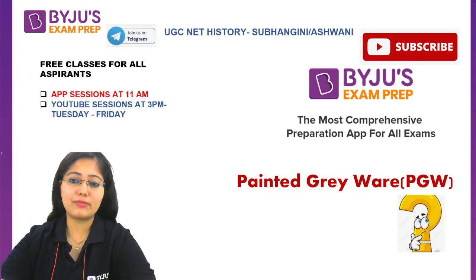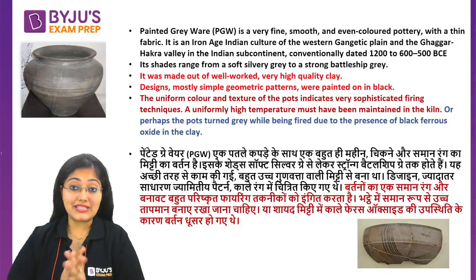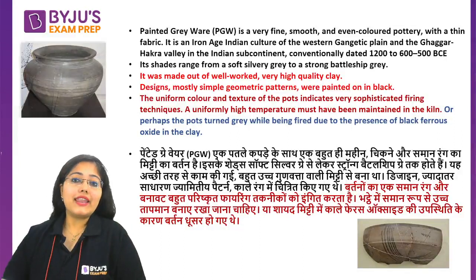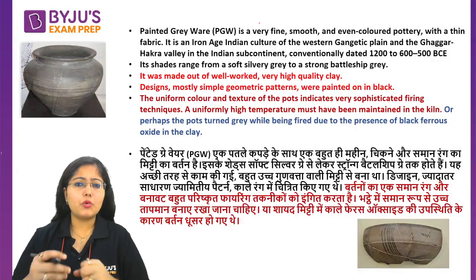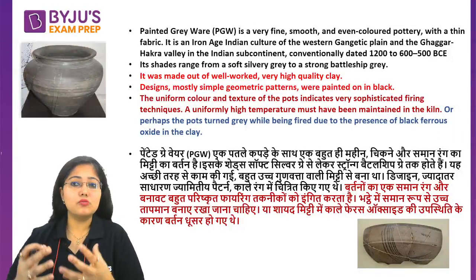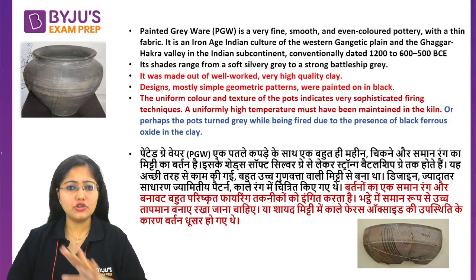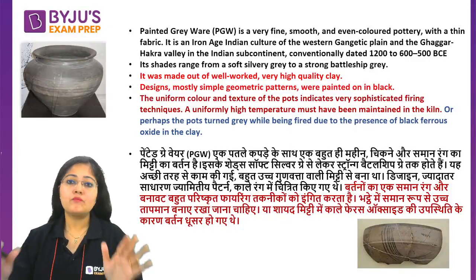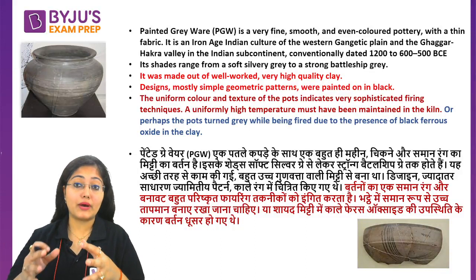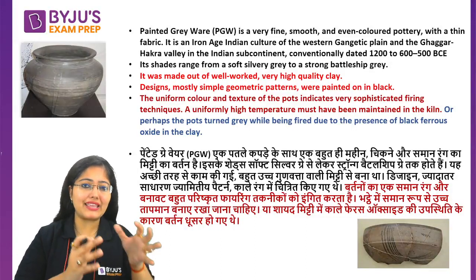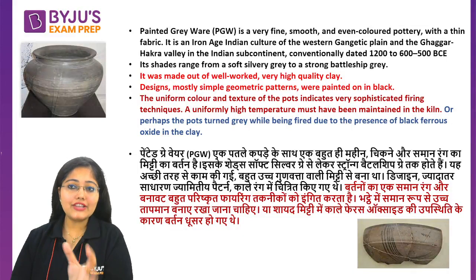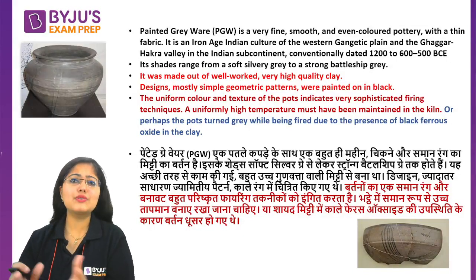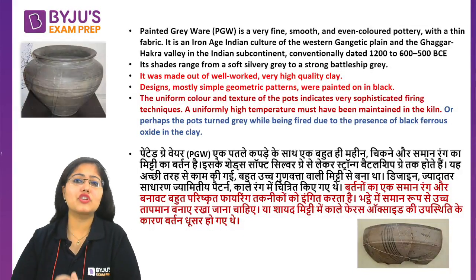When we talk about PGW — Painted Grey Ware pottery — these are very fine, very smooth, and very evenly colored. They are uniform in color. This belongs to the Iron Age of Indian culture, specifically the Gangetic Valley and the Ghaggar-Hakra Valley. The time period is specifically 1200 to 600 BC.